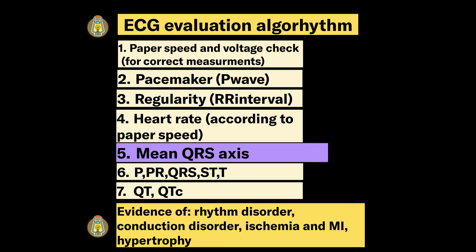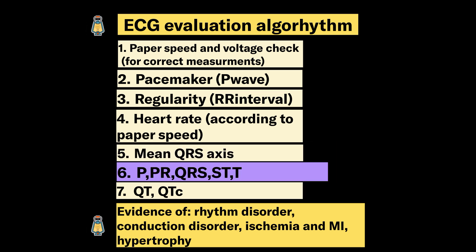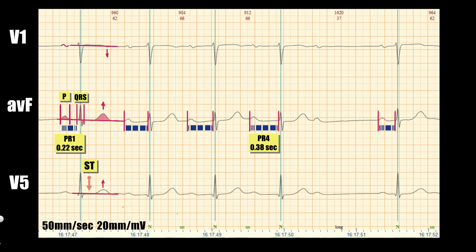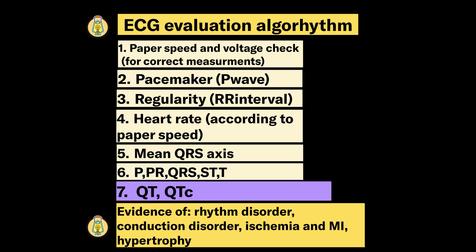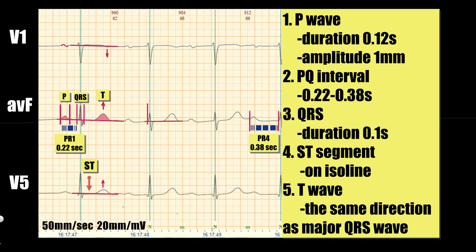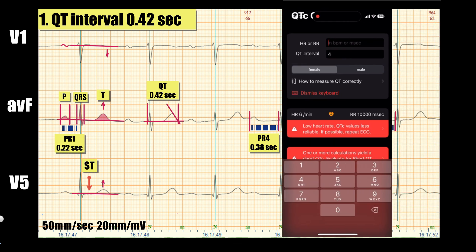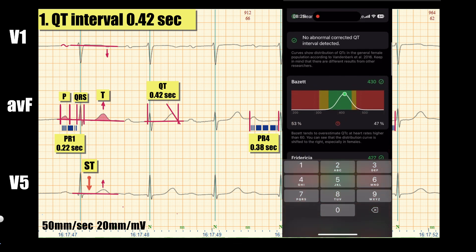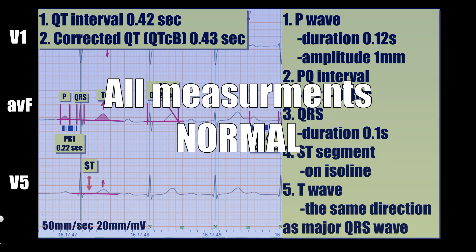Now we check the remaining ECG parameters. Mean QRS axis cannot be evaluated from a three-lead ECG strip. Evaluation of all waves and segments shows that all measurements except for PR intervals are in the normal range. For QT interval measurement, the tangent method is used; a link to that video will be in the description. For corrected QT calculation, Bazett's formula is used since the heart rate is in the range of 60 to 100. The QT interval is also in the normal range.